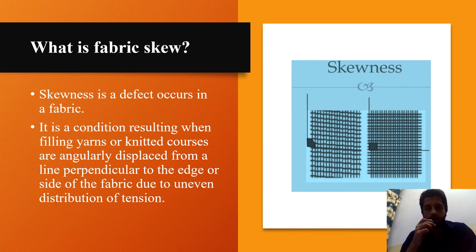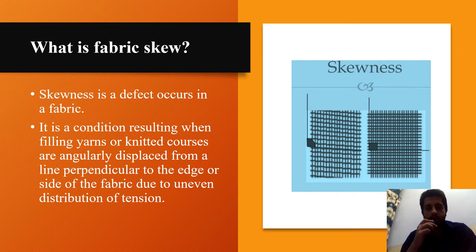First, we talk about fabric skew. It is the distortion in the construction of fabric or in the yarn that constitutes the fabric. Skewness is a condition resulting when filling yarns or knitted courses are angularly displaced from a line perpendicular to the edge or side of the fabric due to uneven distortion of tension.